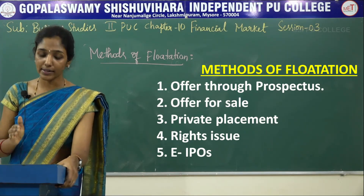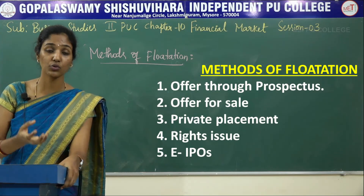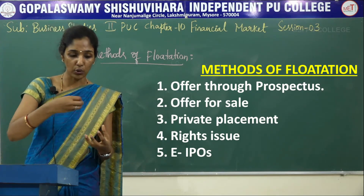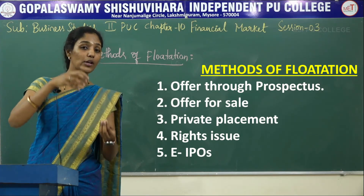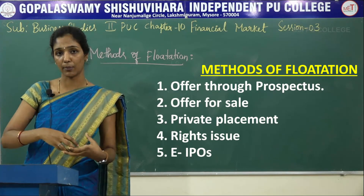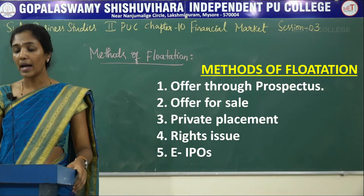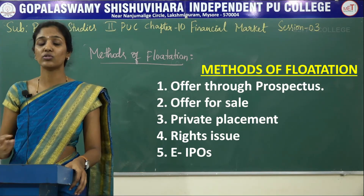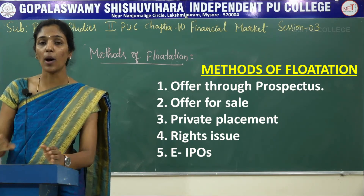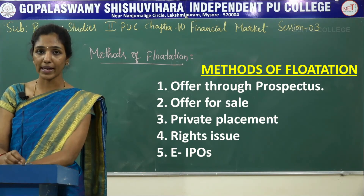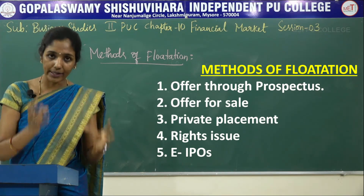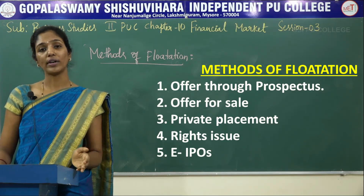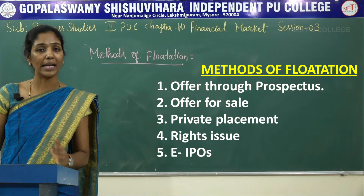The next method is rights issue. Under this method, the company gives a privilege or preference to its existing or current shareholders to purchase the new shares of the company. The next method is e-IPOs. Here, a company issues its securities to the general public through the online system of the stock exchange. For this, the company needs to appoint a broker for the purpose of accepting applications and placing orders with the company. These are all the methods of flotation in the primary market.